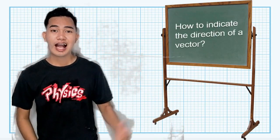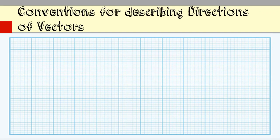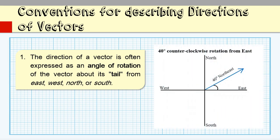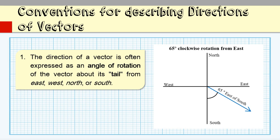Here's a question: how do we indicate the direction of a vector? We apply the following conventions. First, the direction of a vector is often expressed as an angle of rotation of the vector about its tail from east, west, north, or south. For example, a vector can be said to have a direction of 40 degrees northwest, meaning a vector pointing west has been rotated 40 degrees towards the northerly direction. Also, a vector can be said to have a direction of 65 degrees east of south, which means a vector pointing south has been rotated 65 degrees towards the easterly direction.